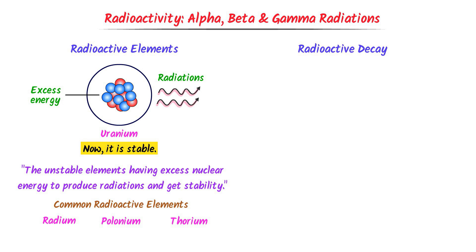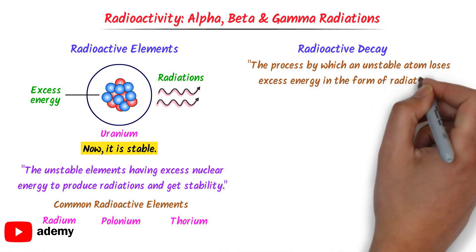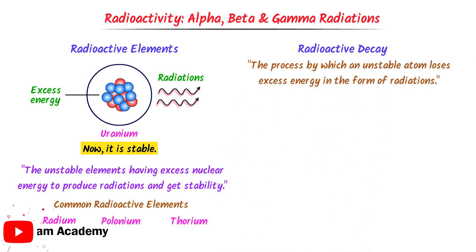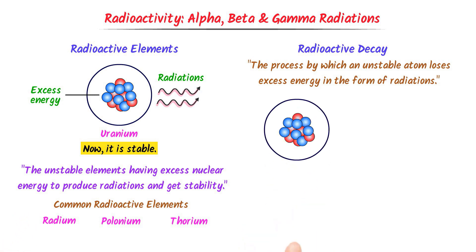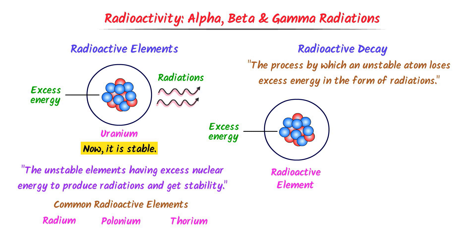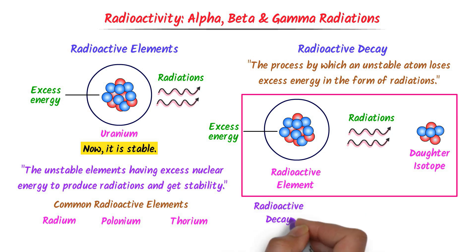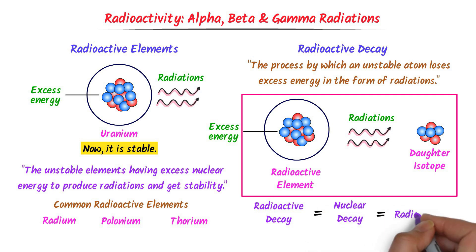Radioactive decay is defined as the process by which an unstable atom loses energy in the form of radiations. This radioactive element is unstable and its nucleus has extra or excess energy. It will release that excess energy in the form of radiations and convert to a daughter isotope. This whole process is known as radioactive decay, or nuclear decay, or simply radioactivity.